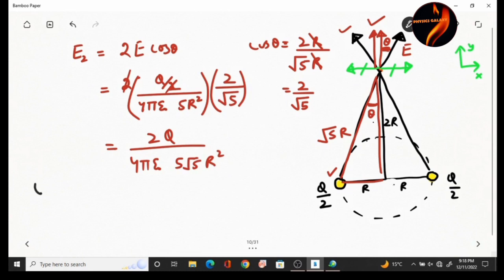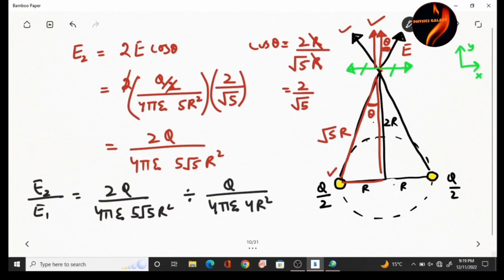E2 divided by E1, so that was 2q divided by 4 pi epsilon 0, 5 root 5 r squared, divided by q divided by 4 pi epsilon 0, 2r squared. So 2q cancels, 4 pi epsilon 0 cancels, r squared cancels out, so answer will be 2 by 5 root 5.